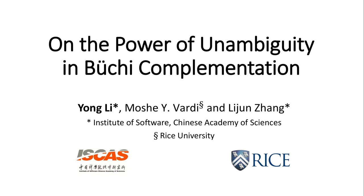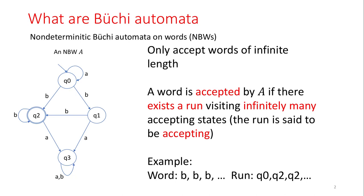First, I want to introduce what Büchi Automata are. Büchi Automata have the same structure as nondeterministic finite automata — they both have states, labels on transitions, initial states, and accepting states — except that Büchi Automata only accept infinite words. A word is accepted if there exists a run visiting infinitely many accepting states. Such a run is said to be accepting.